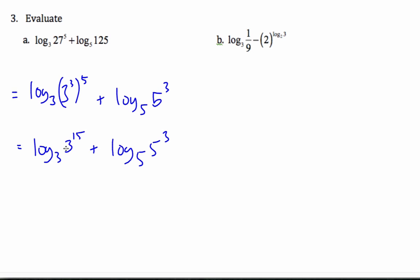Here I know from my exponent rules this is 3 to the 15. These are inverses, this exponential and this log are inverses, they cancel each other so I end up with 15. Again they're inverses, so I end up with 3. And so the answer is 18.